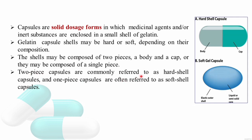Two-piece capsules are commonly referred to as hard shell capsules, and one-piece capsules are often referred to as soft shell capsules.